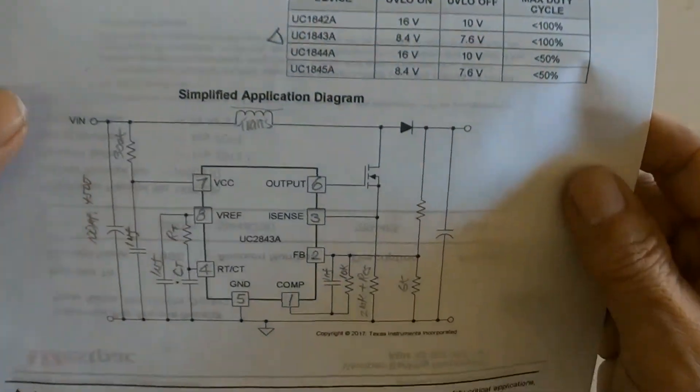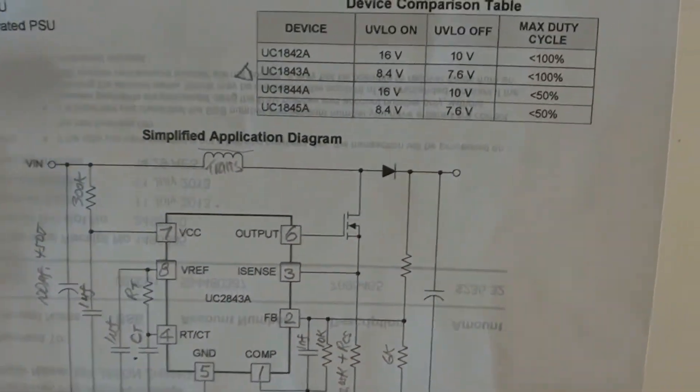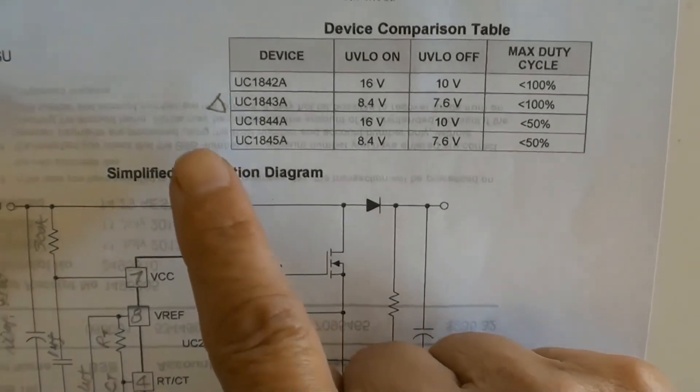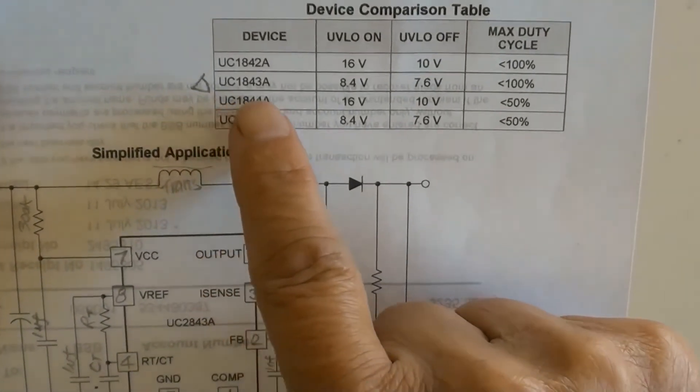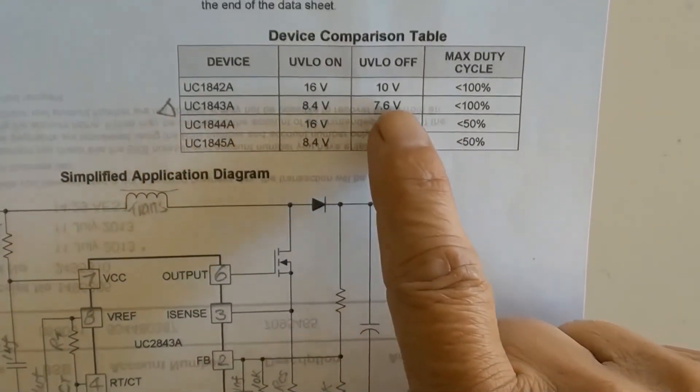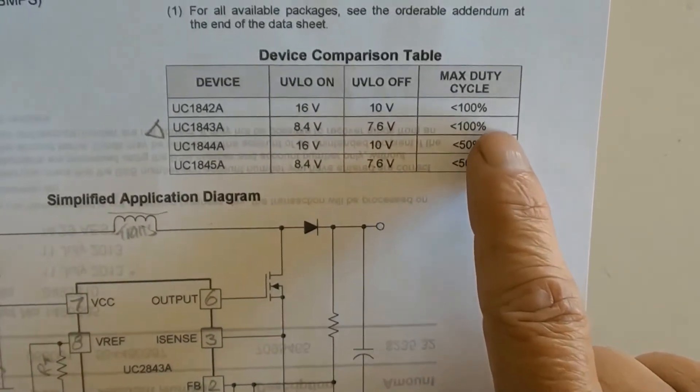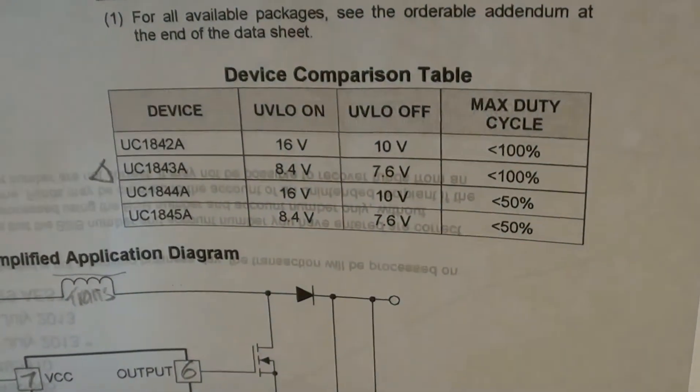In fact, from its datasheet, it can be seen here that UC3843's basic functions are the same as UC3842's, except its VCC, which is the minimum power requirement to switch it on or off.